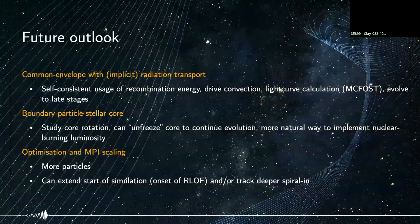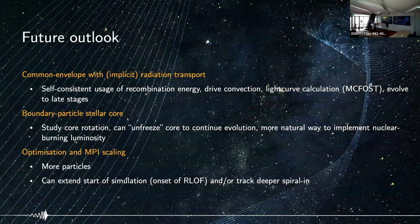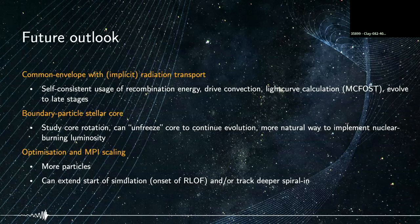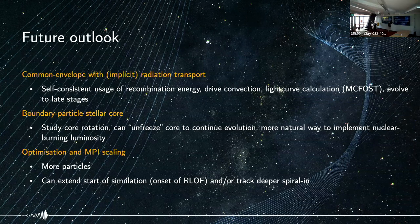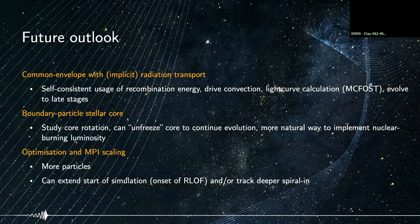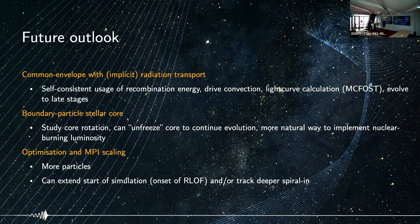For future outlook: to move forward in simulating common envelopes, we must include radiation transport. This will allow self-consistent modelling of recombination energy injection, driving convection instead of artificially suppressing it, and calculating light curves with an envelope that can cool. I've also mentioned using a boundary particle stellar core to study core rotation and unfreeze it later for deeper in-spiral evolution. Optimization and MPI scaling would allow higher resolution and longer simulations.